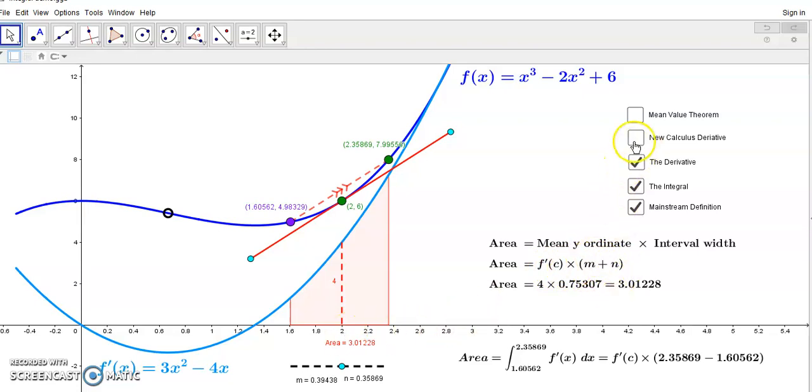Now, f prime of c can be found from the new calculus derivative, and this is the relation. So, the area is this f prime of c times the interval width. Does that make sense?